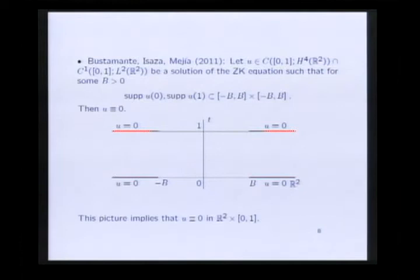In 2011, we improved Pantea's result. We proved that if we have a sufficiently smooth solution of the ZK equation such that for two times T equals 0 and T equals 1 the solution has compact support, then it must be identically equal to 0. We must point out that in this case the comparison is between an arbitrary solution U and the 0 solution.